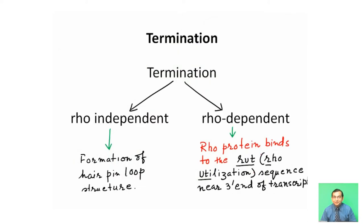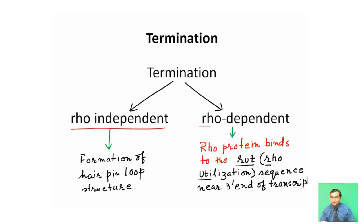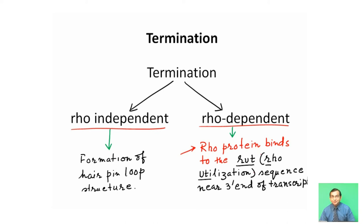Termination is of two types. One is rho-independent termination, where formation of a hairpin loop structure takes place. Another is rho-dependent termination, where termination occurs with the help of a rho protein that binds to the RUT sequence. RUT means rho utilization sequence, which is present near the 3 prime end of the transcript.